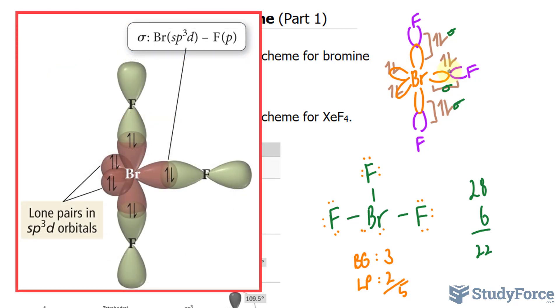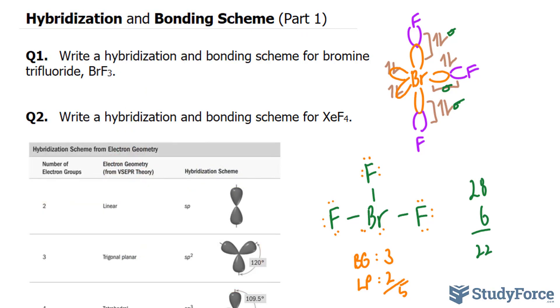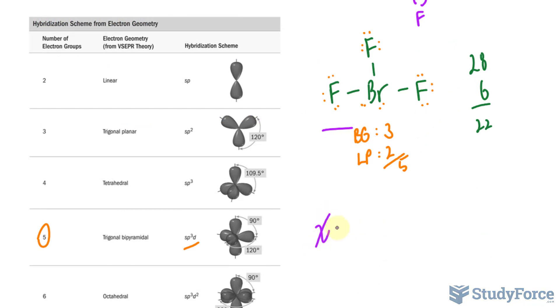In question number two, we're asked, write a hybridization and bonding scheme, this time for xenon tetrafluoride, and it has the chemical formula XeF4. Let's go ahead and do that. So we'll write down the chemical formula again.